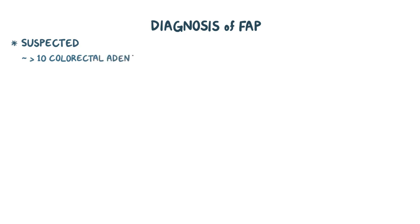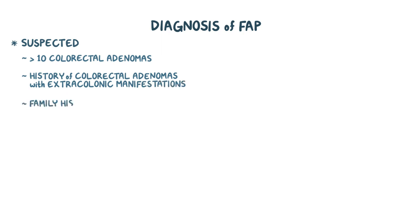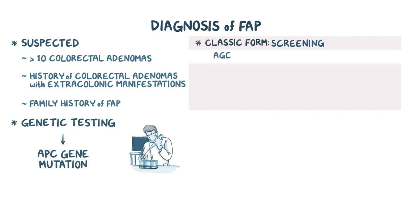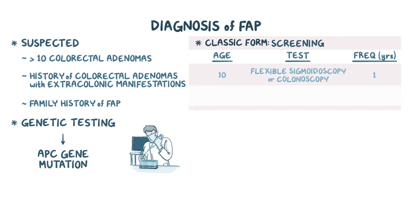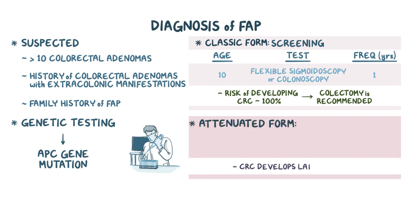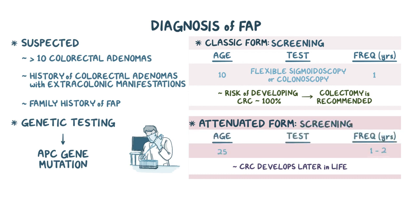The diagnosis of FAP should be suspected in any individual with more than 10 colorectal adenomas, a history of colorectal adenomas with extracolonic manifestations, or a family history of FAP. Genetic testing is done to look for an APC gene mutation. Screening for individuals with classic FAP begins around age 10 with annual flexible sigmoidoscopy or colonoscopy. With classic FAP, the risk for eventually developing CRC is about 100%, and since not every polyp can be removed endoscopically, a colectomy is typically recommended. For attenuated FAP, CRC typically develops later, so screening begins at age 25 and is done every 1-2 years using colonoscopy.